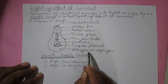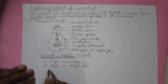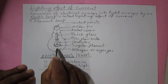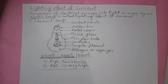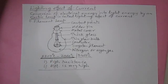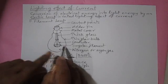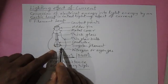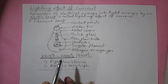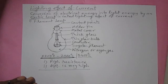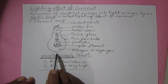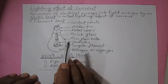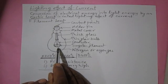Now, why is the bulb filled with nitrogen or argon gas? There are two reasons. The first reason is to cut off the contact of oxygen with the hot filament. If oxygen in the air comes in contact with tungsten when it is hot, tungsten reacts with oxygen to form tungsten oxide. The thin tungsten filament becomes thinner and thinner and eventually breaks within a few days. That is why air is removed and the bulb is filled with nitrogen or argon gas.